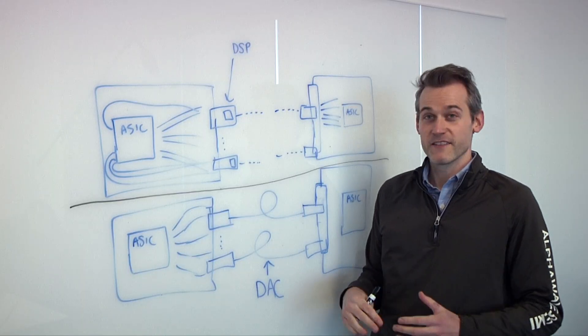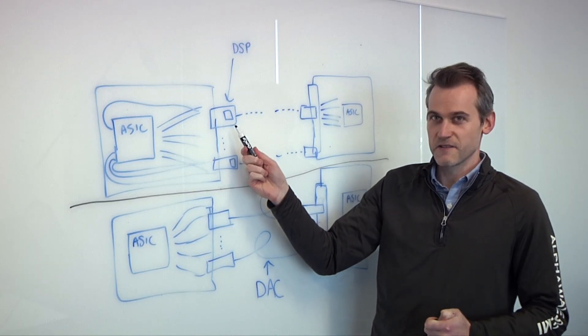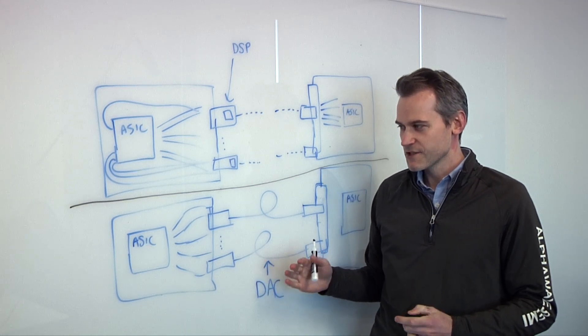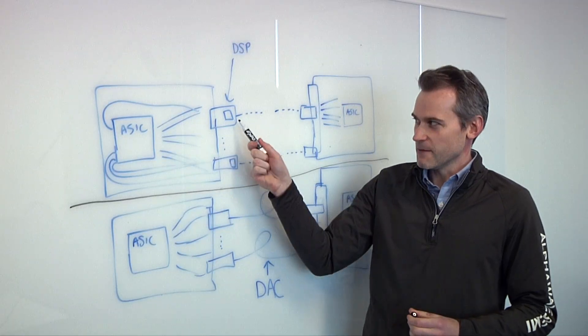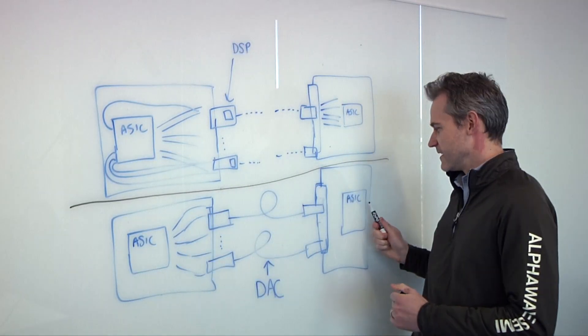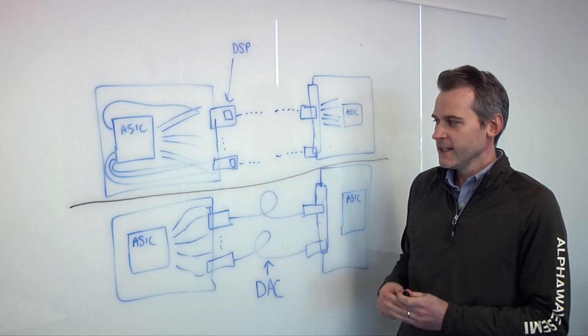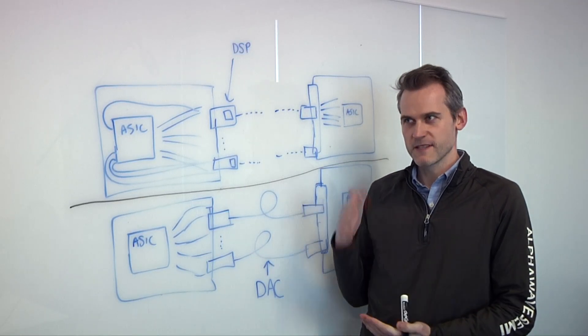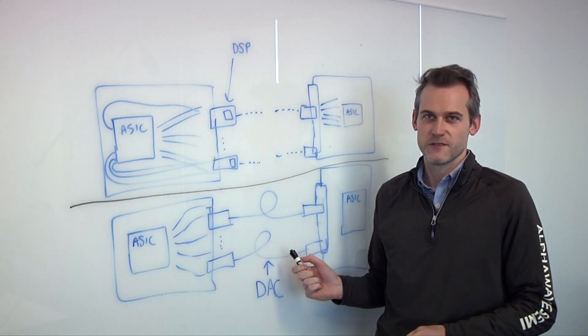But now when we make the jump to 200 gig per lane, just this reach alone is 32 dB. They usually keep the max reach of these long reach 30s to 40 dB. So this is about 32 dB, and this is still 40 dB. Even though this is still 40 dB, the reach of this passive copper cable has decreased from about 7 meters at 25 gig all the way down to 1 meter at 224 gig.